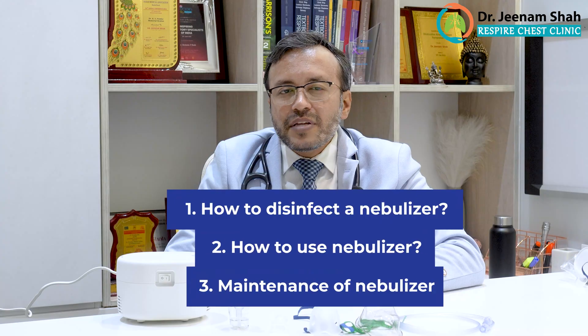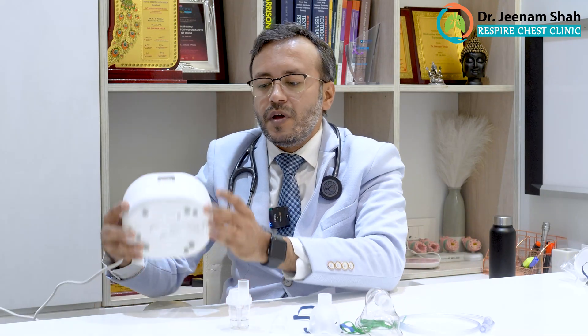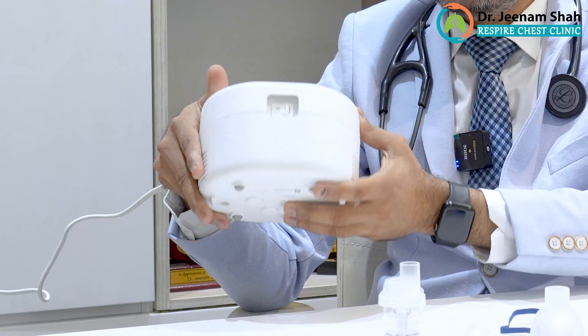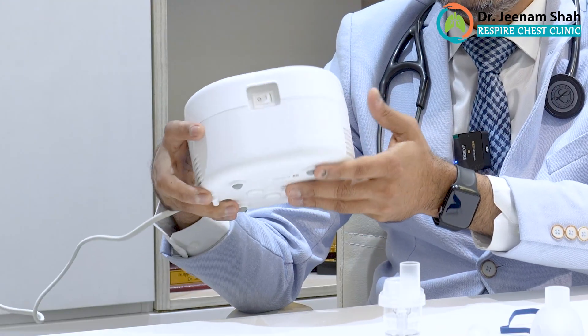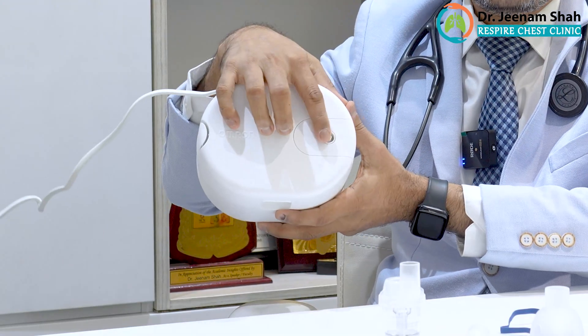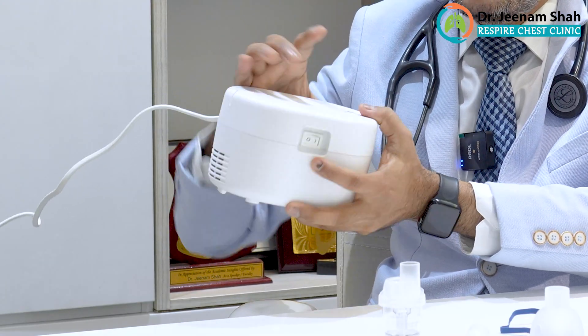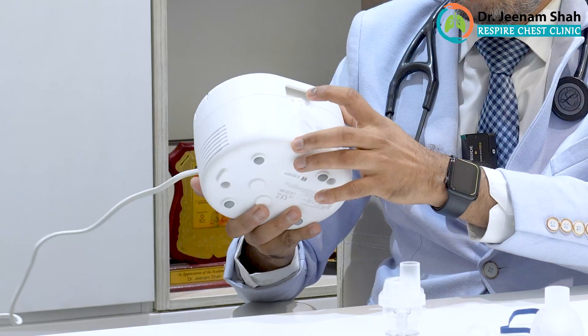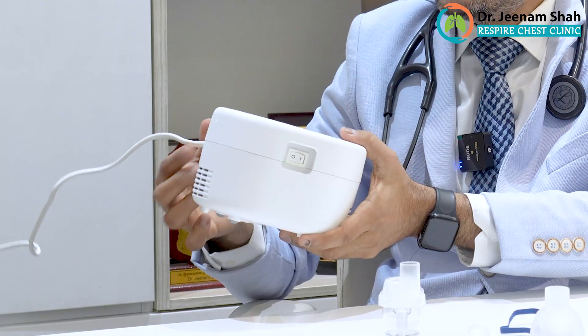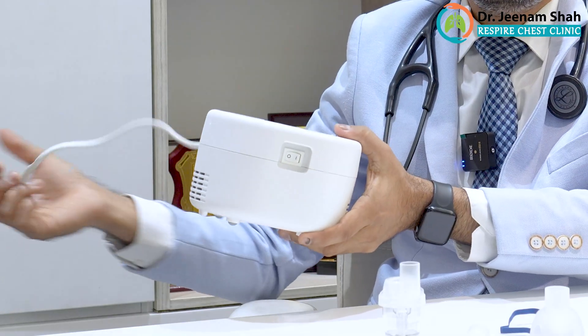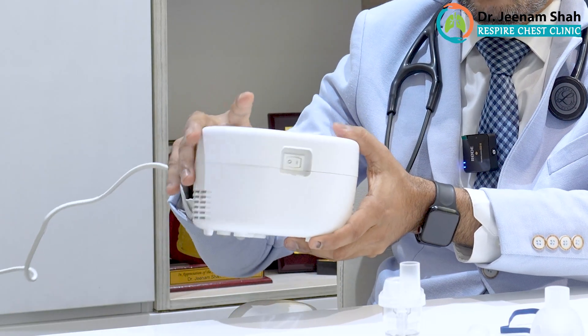Coming to the second part — how to use a nebulizer. This is the nebulizer as you can see. This is the area where the tubing gets attached. This is the button for switching it on, and this is where it gets connected to the power outlet.